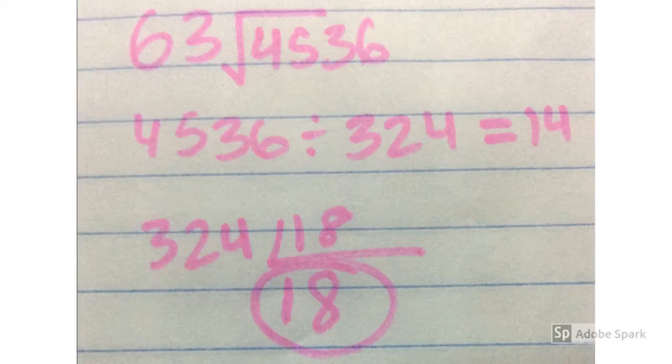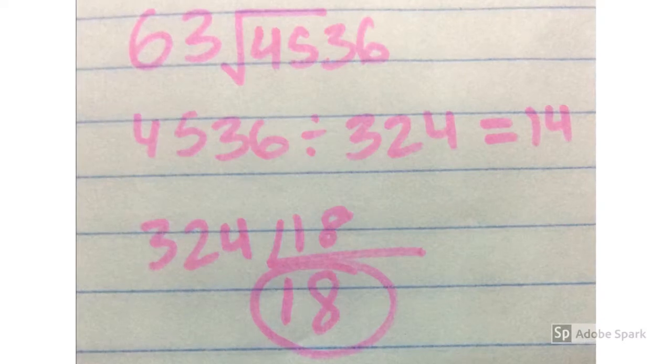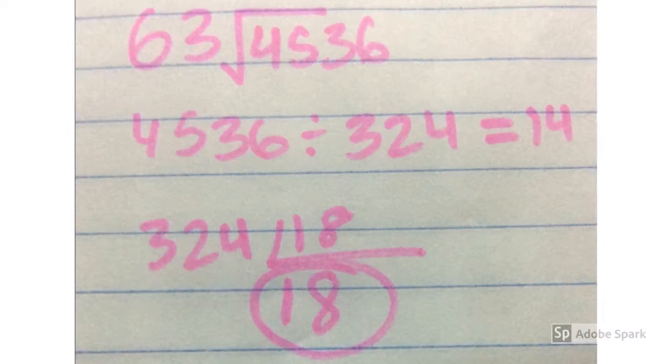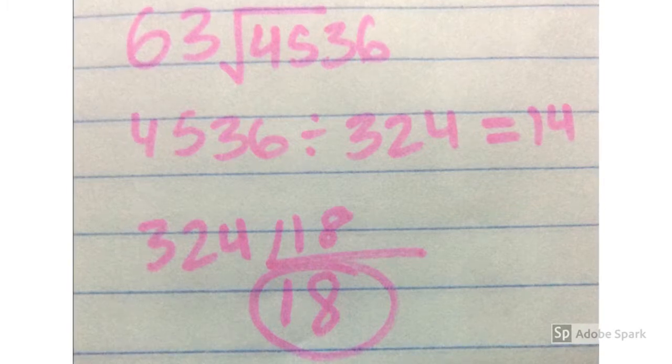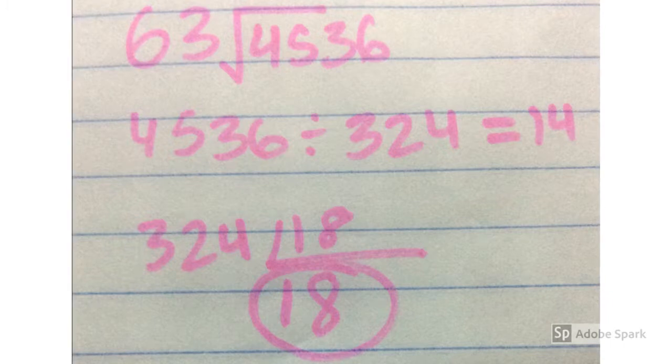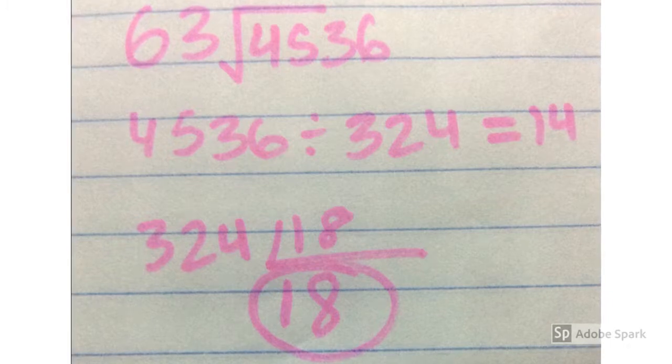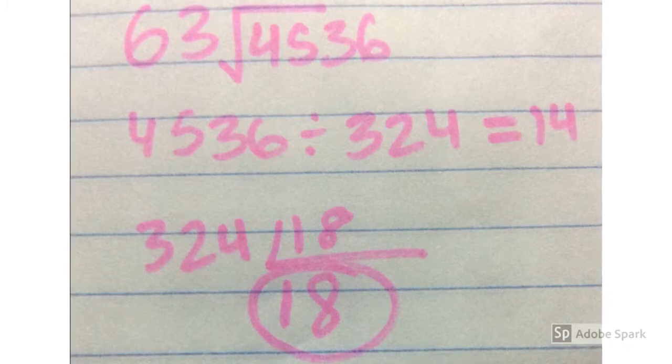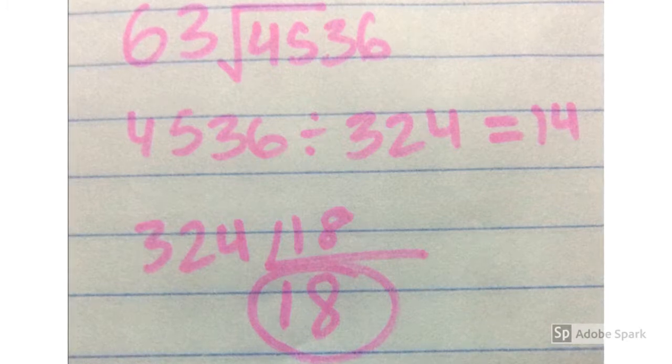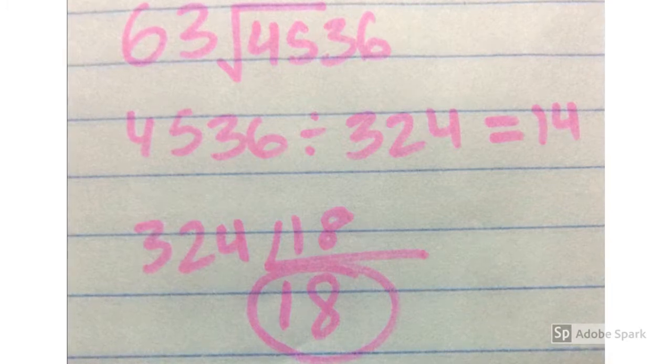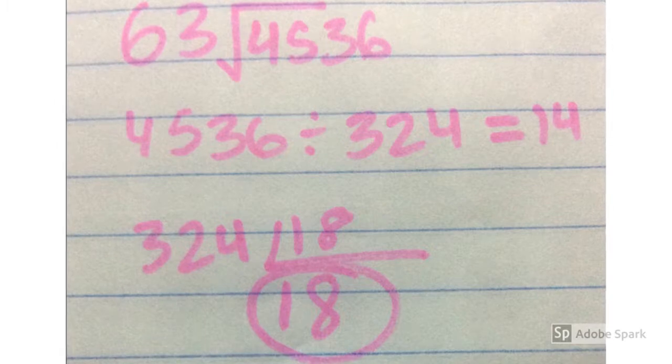While we're multiplying radicals, when we're simplifying, we need to divide the number under the radical sign with a number that can be divided evenly, so that we can get rid of the radical sign over that number. For example, if we end up with 63 radical 4536 before simplifying, then we divide 4536 by 324, because it can be divided evenly.